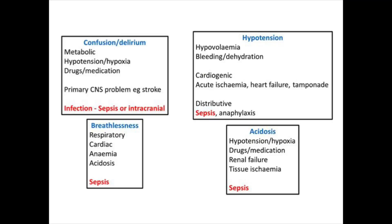Having two of those three means you need to review your diagnosis, initiate therapy, and escalate the care level. If you're in the community, send them to hospital. If you're in hospital, upgrade them to the next level of care. But these features are not unique to sepsis — you must consider other causes of confusion, hypotension, breathlessness, or acidosis, particularly in patients with underlying cardiorespiratory disease. The important thing is: if they're developing two out of those three, you need to be assessing and thinking for sepsis.